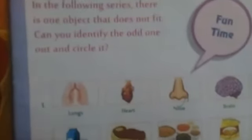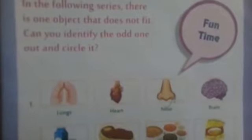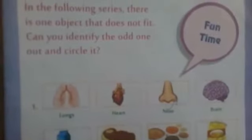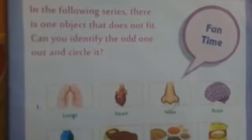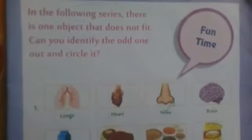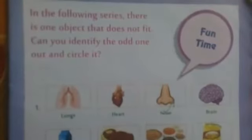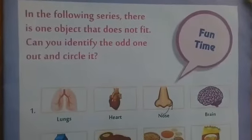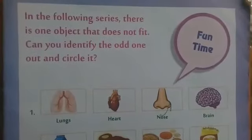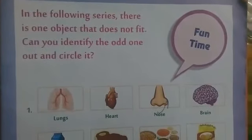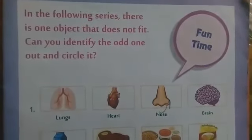See this book. Four pictures are here: lungs, heart, nose, brain. Among these four, three pictures are inner parts of our body. Only one is outside of our body. Which one is the odd one out? Nose. Okay.